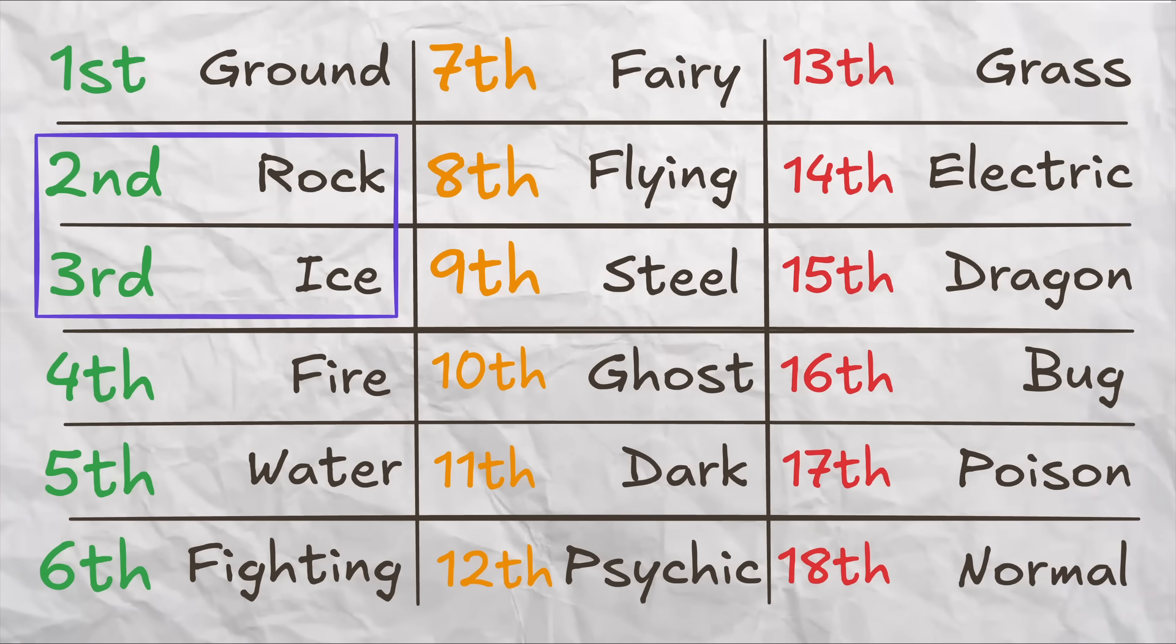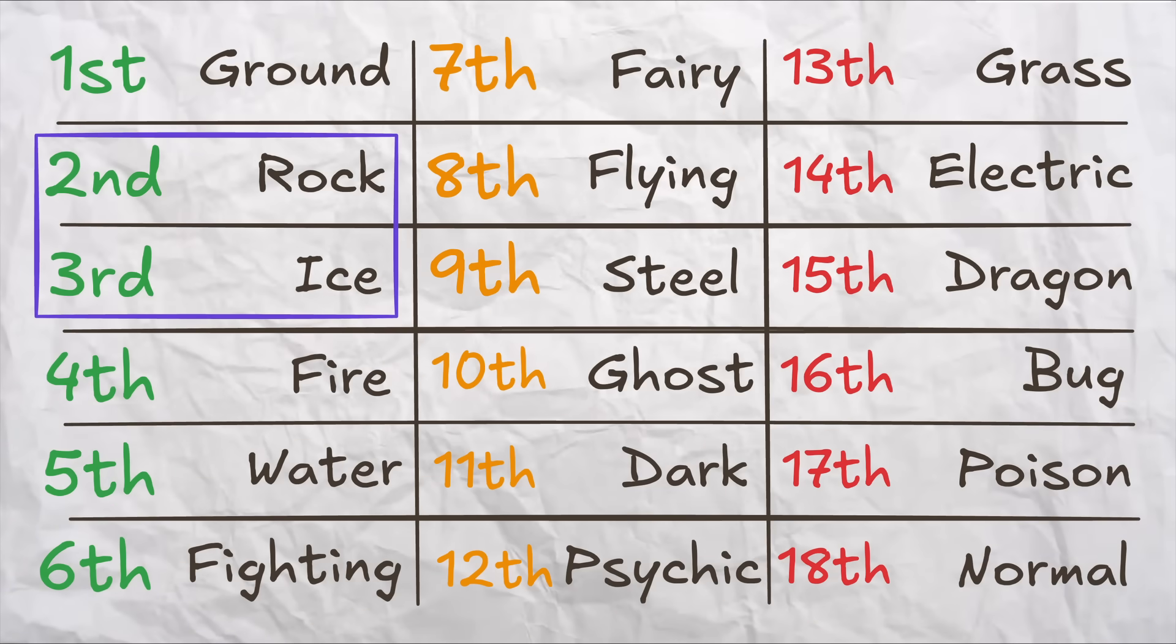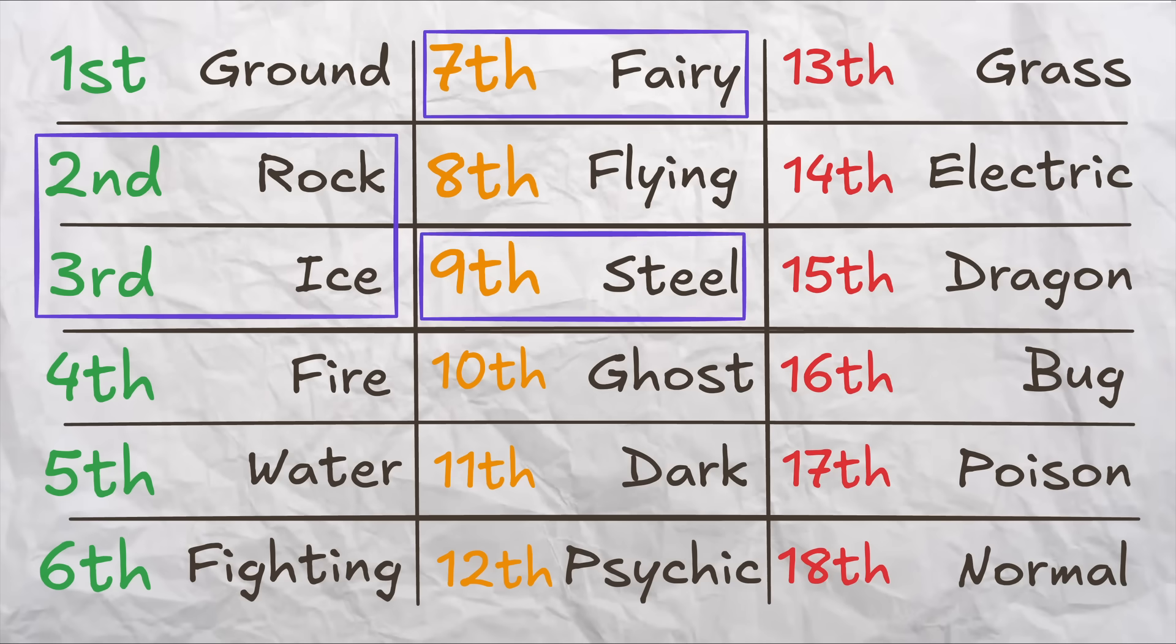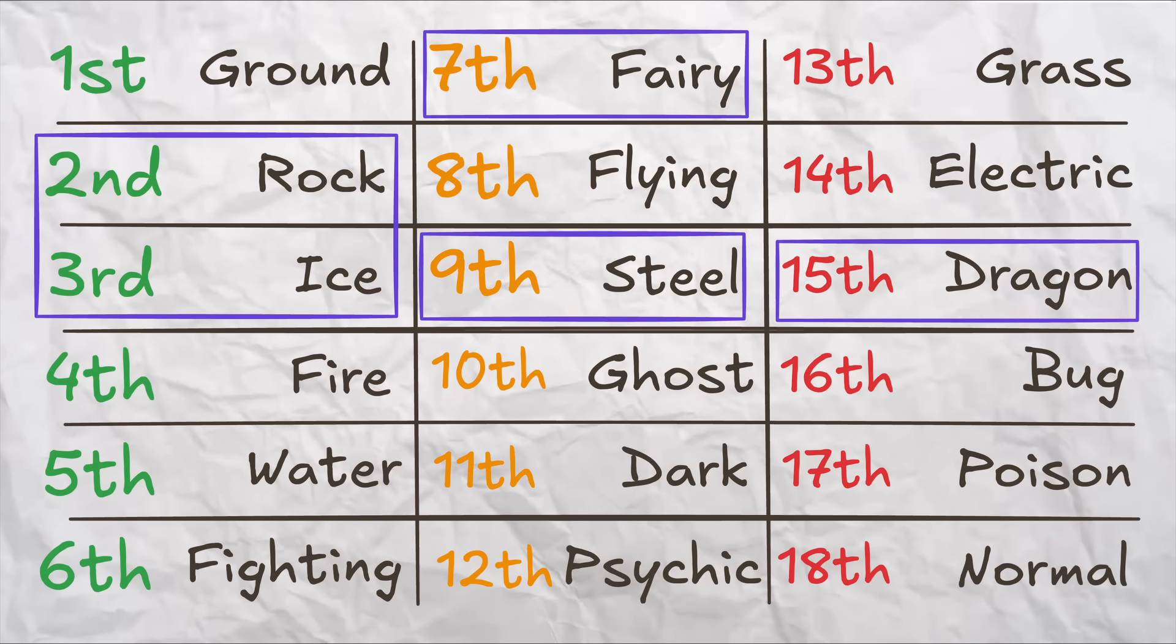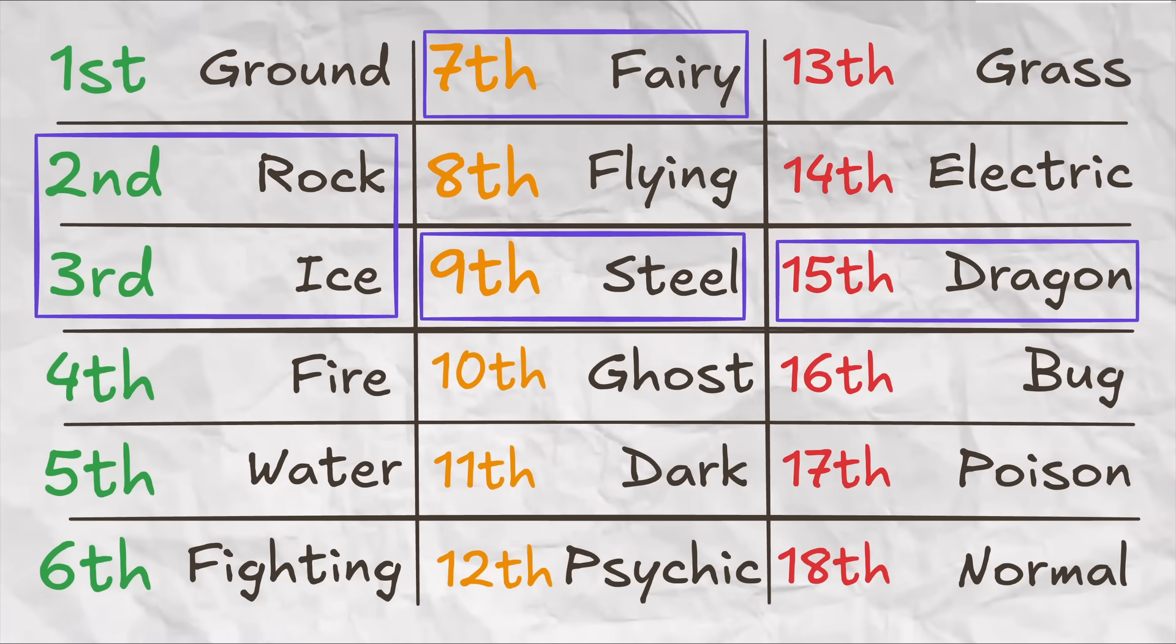Why the heck are rock and ice the second and third best types? Why are fairy and steel ranks so low? What is dragon doing all the way at the bottom there? There's clearly something missing here.